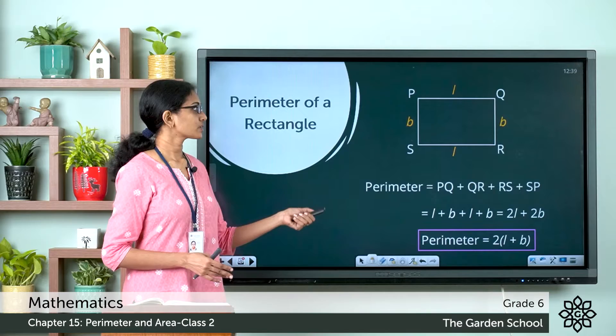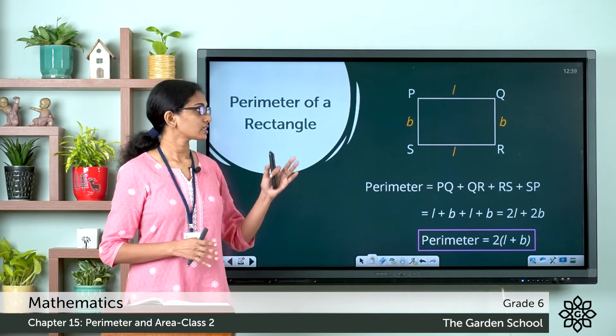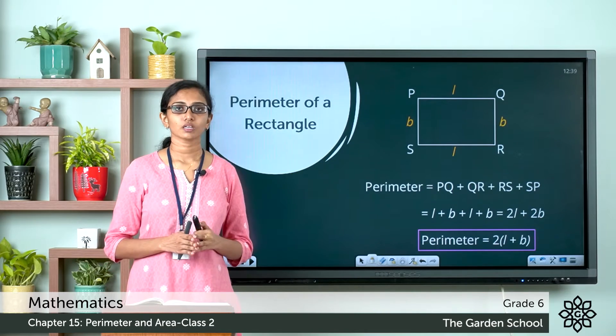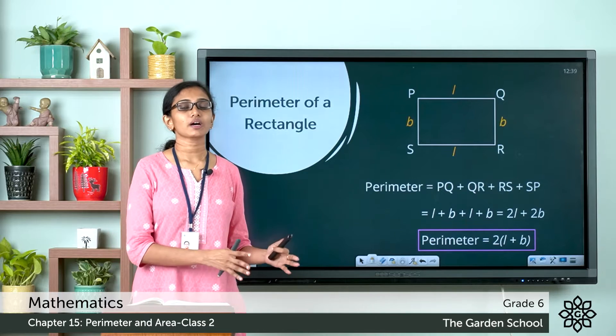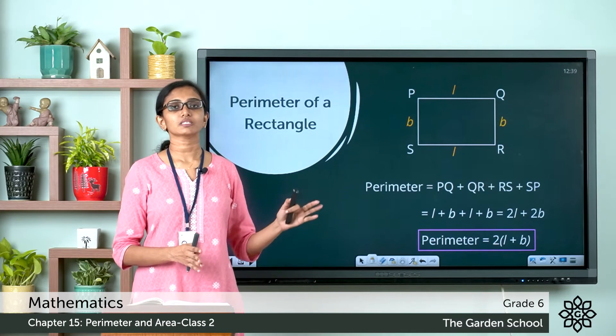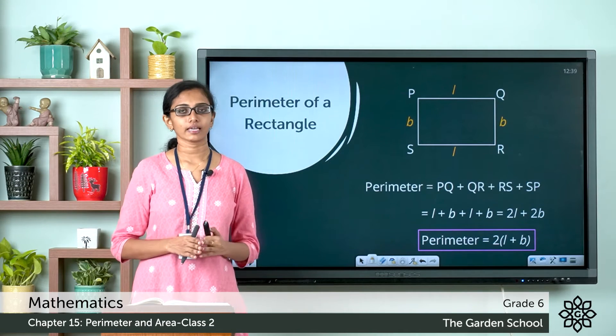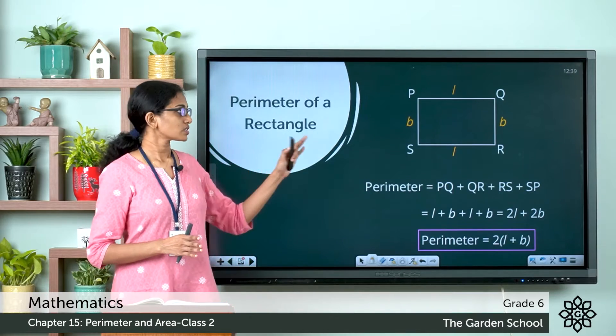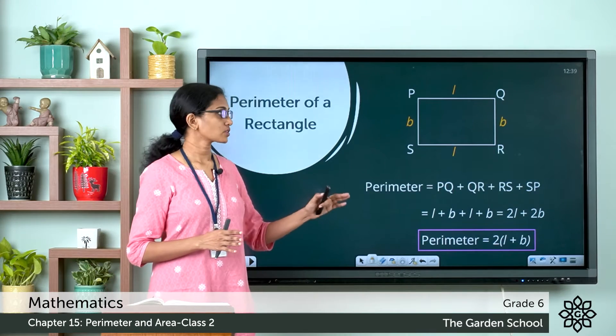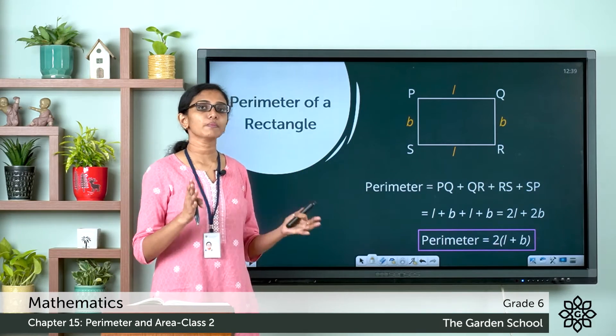So here we can see a rectangle. It is rectangle PQRS. We know a rectangle is a quadrilateral in which the opposite sides are parallel and equal in length. So this rectangle PQRS has got a length L and a breadth B.